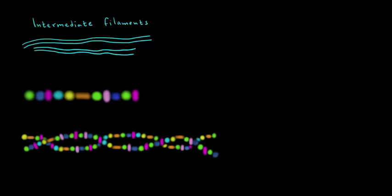Let's move on to intermediate filaments. Intermediate filaments, in contrast to microtubules and microfilaments, are made up of many different types of proteins that are strung together into polymers. And then these polymers twist together to make the intermediate filaments.